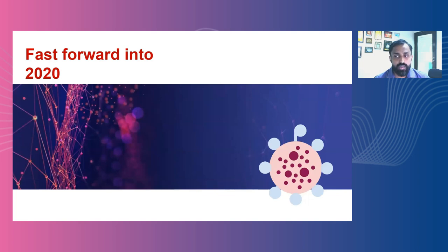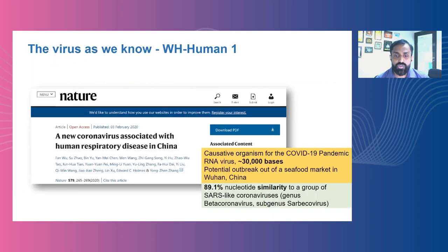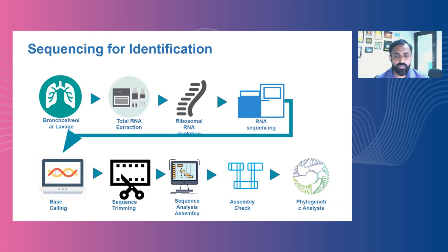Fast forward into 2020, when the COVID pandemic struck the world. If you really go back to the literature and the publication which described the first SARS-CoV-2 genome, you will see that none of the traditional microbiology approaches were used. What the researchers essentially did was to isolate the nucleic acid material from the bronchoalveolar lavage of the patient, directly do an RNA extraction and sequencing. From the sequencing, they could identify that this is a coronavirus, but distinctly different from other coronaviruses described, and therefore they named it a novel coronavirus.